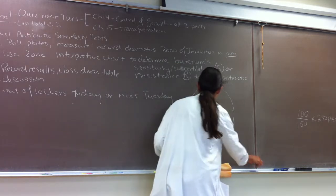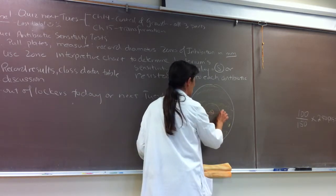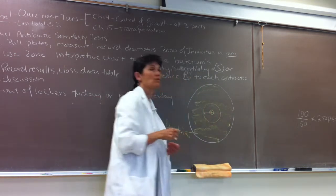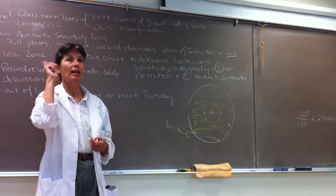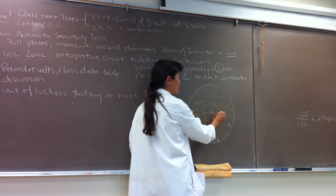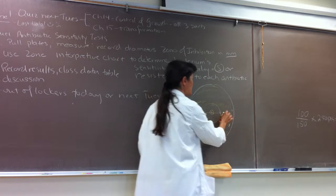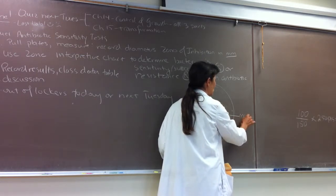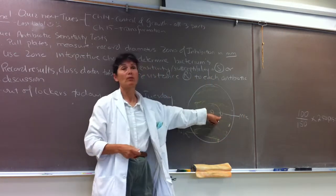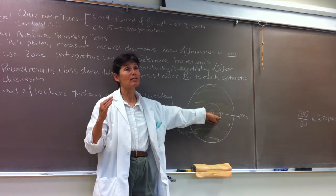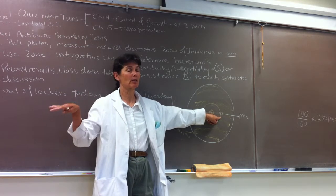So what you all are going to do is you're going to use your metric rulers. You're going to measure the diameter of the zone of inhibition, right? And remember, the minimal, the MIC of the antibiotic would be found in the agar right at the border of the zone of inhibition. That's important because it connects to the next step we're going to do.